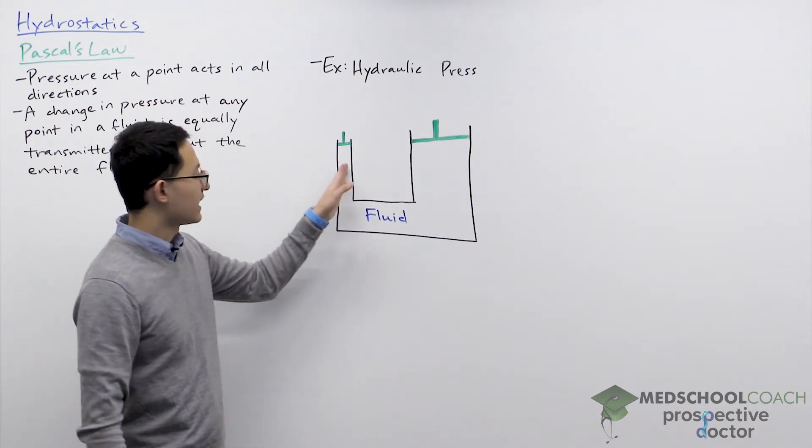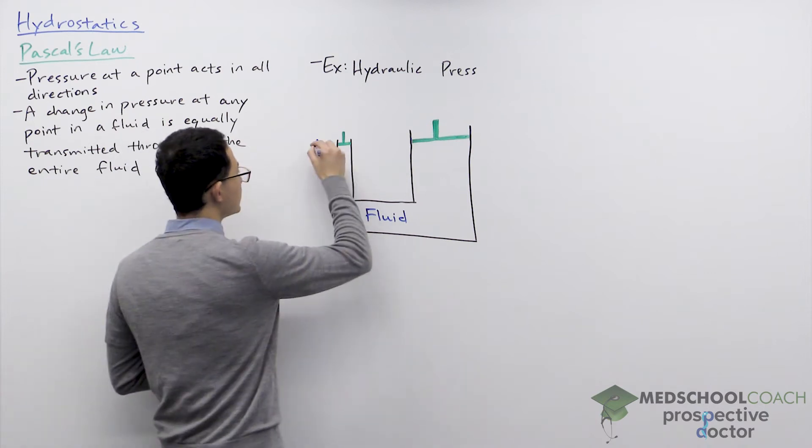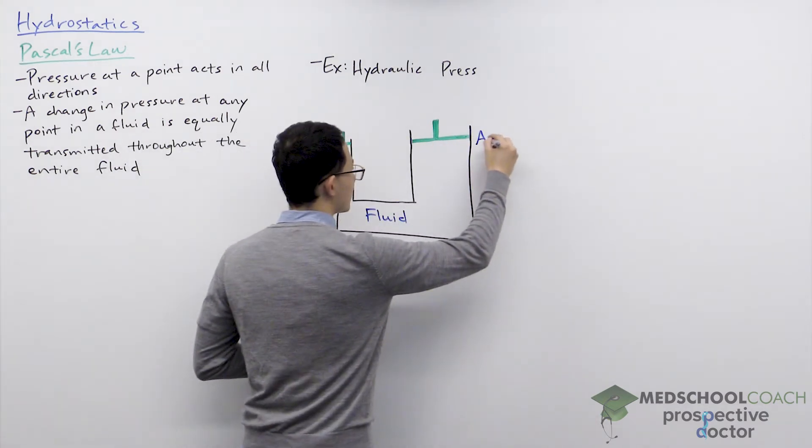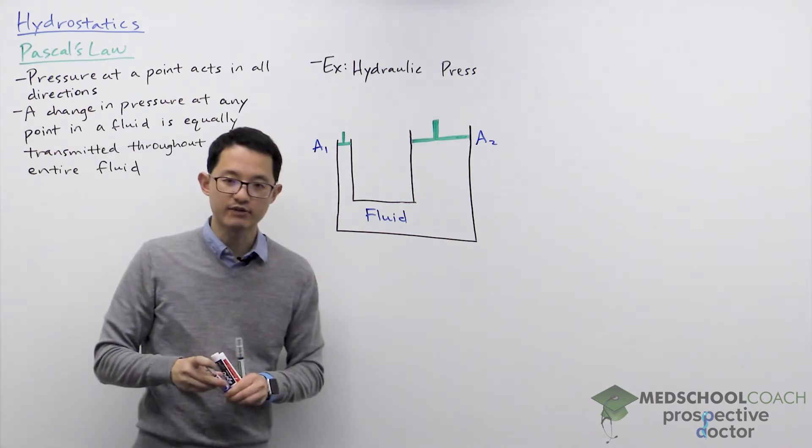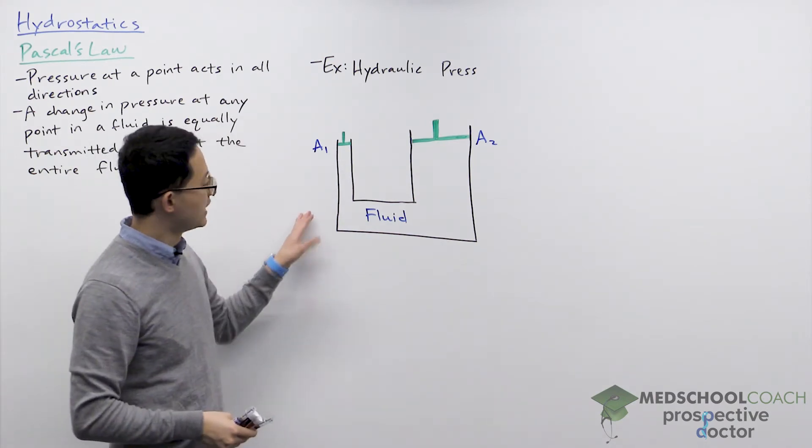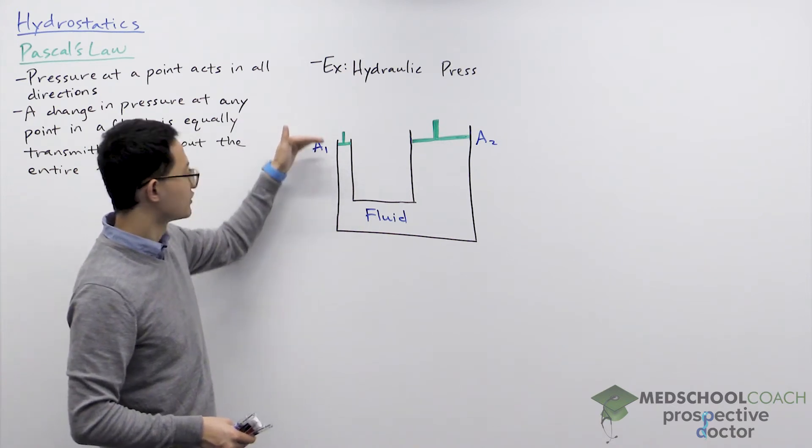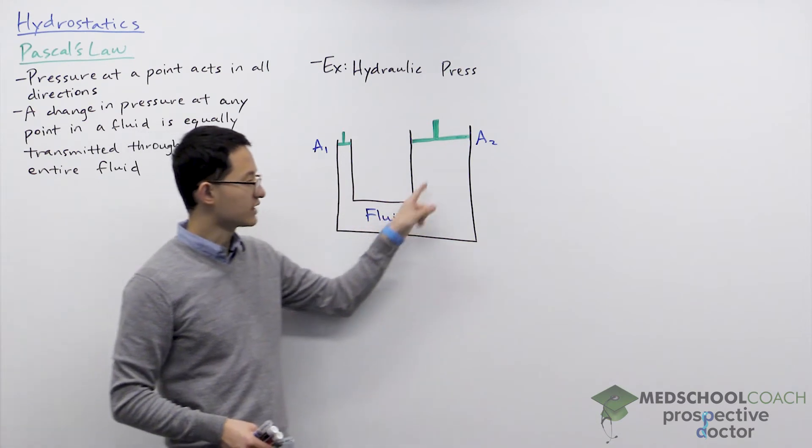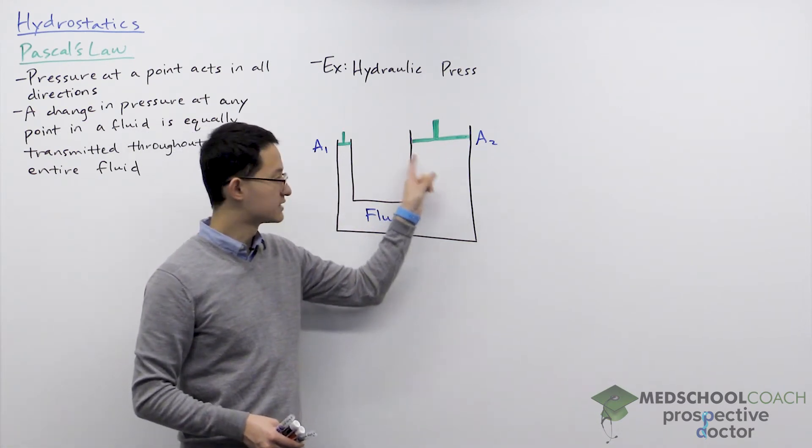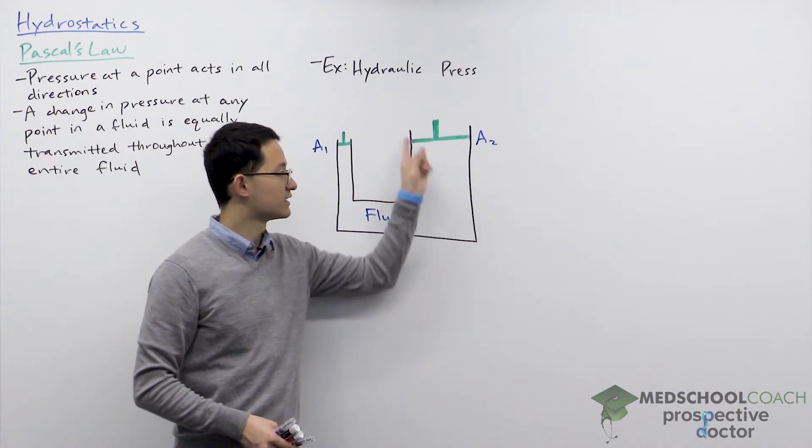And one side has a smaller area so we can call this A1 and this side over here has a larger cross-sectional area A2. So essentially what people do with hydraulic presses is you can push down on one side to introduce a pressure in the fluid. That pressure gets transmitted in all directions and essentially produces the same pressure at the second position, at this other piston.